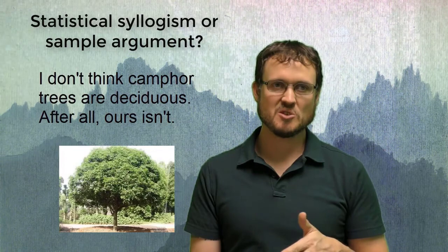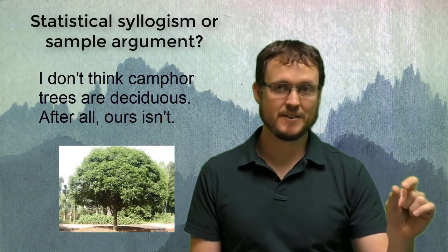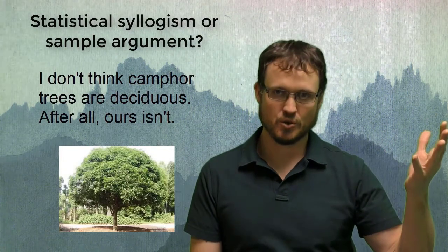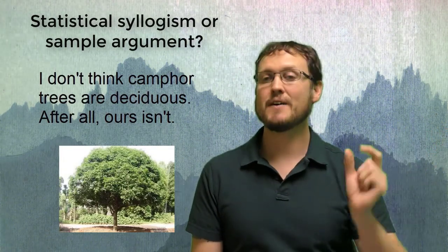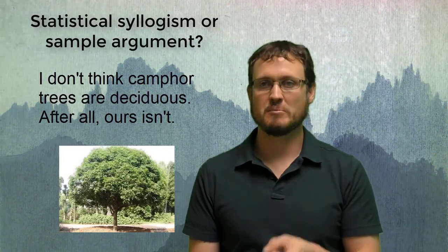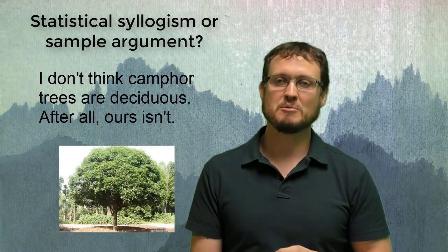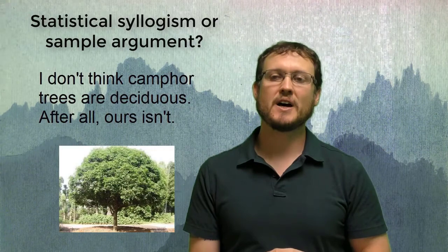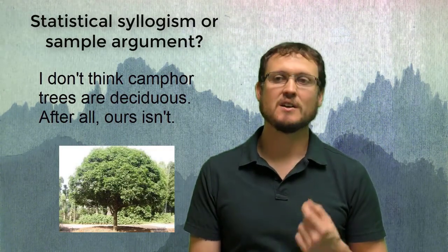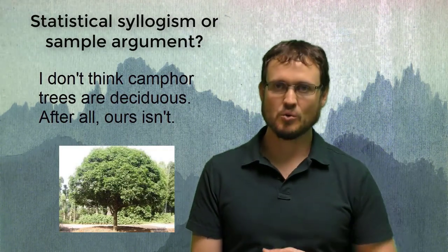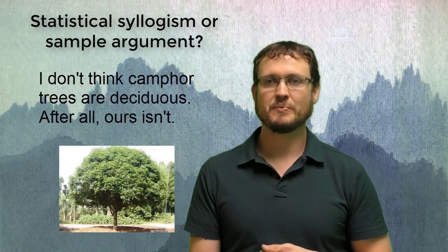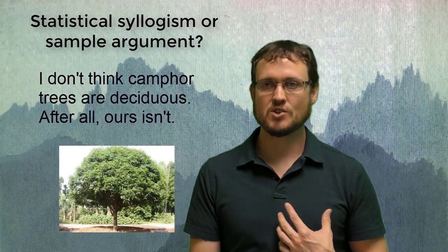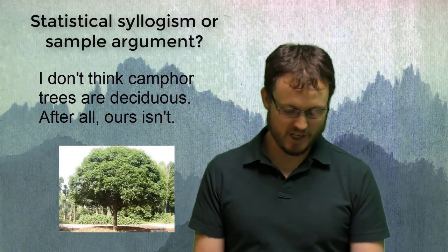Remember, as we've seen, a statistical syllogism goes to a specific conclusion about a thing and a sample argument goes to a general conclusion about a population. So if I find that the conclusion of the argument is general, it's likely that I'm dealing with a sample argument. But if I find that the conclusion of the argument is specific, then it's likely that I'm dealing with a statistical syllogism.